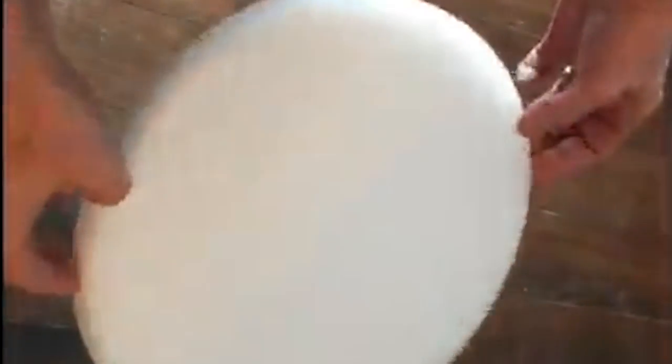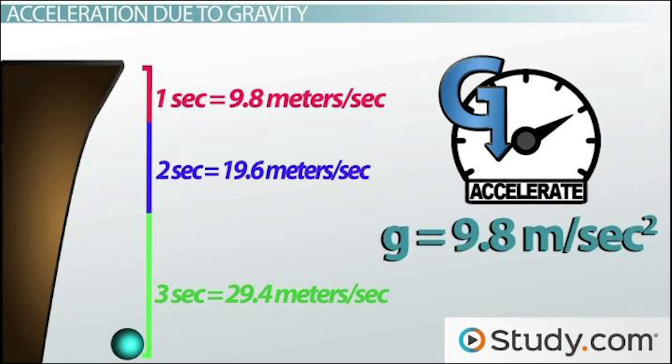This force would get stronger the further you got from the center of rotation, and it would be very easy to measure. We do not see such a force on the Earth. The other possible way that the Earth could rotate is flipping end over end like a coin. However, centrifugal force would also pull objects away from the center perpendicular to the axis of rotation. Once again, we do not measure this sideways acceleration on Earth. What we do measure is a uniform downward acceleration of 9.8 meters per second squared. The only conclusion is that the Earth is not rotating. It is a stationary flat plane.